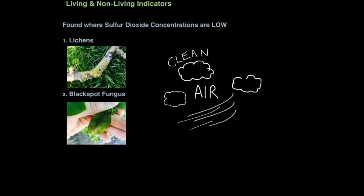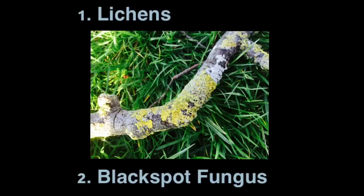So all this talk of pollution is actually quite disturbing. But fear not, there are ways to find out how polluted your area is. Very simple ways. We can use living and non-living indicators. So let's start off with indicators of clean air. For this, I just needed to go into my garden. I took two photos. So the first indicator species are lichens.